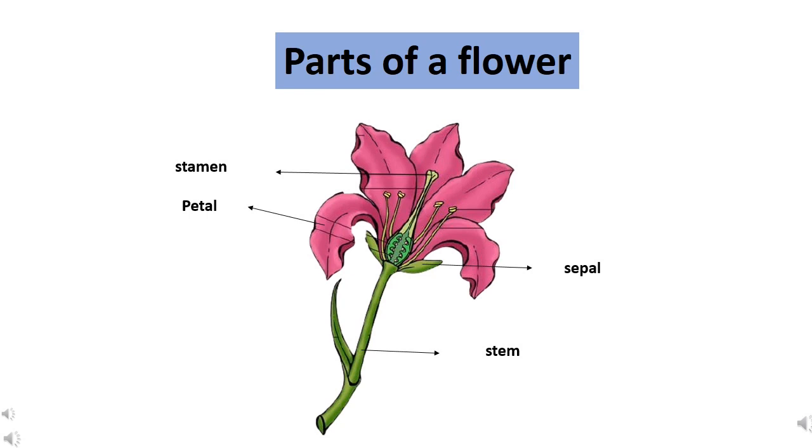Now, let's see parts of a flower. Children, you already know parts of a plant. Flower is one important part of a plant. But here, we are going to see parts of a flower. We will begin with stem.